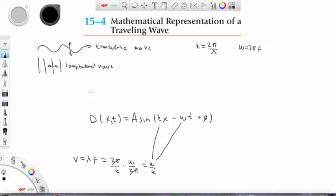So what is x? x is the location at some point along the travel path of the wave. Let's say the wave is a sound wave.